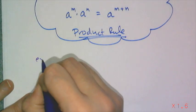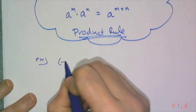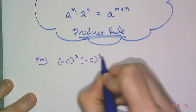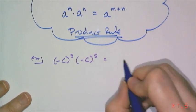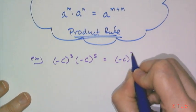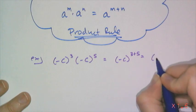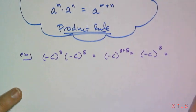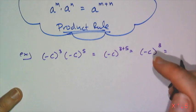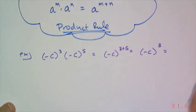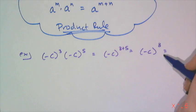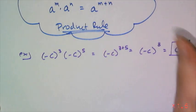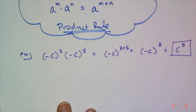For a quick example, if I have negative c to the third power times negative c to the fifth power, that's exactly the same thing as negative c to the three plus five power, which is negative c to the eighth. Negative c is going to be multiplied out an even number of times, so that's just going to be c to the eighth power. And that's how you use the product rule.